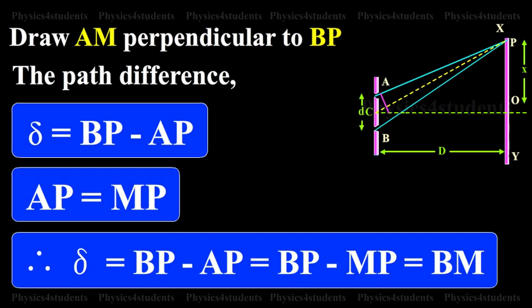Draw AM perpendicular to BP. The path difference delta is equal to BP minus AP. AP is equal to MP. Therefore, delta is equal to BP minus AP is equal to BP minus MP, that is equal to BM.